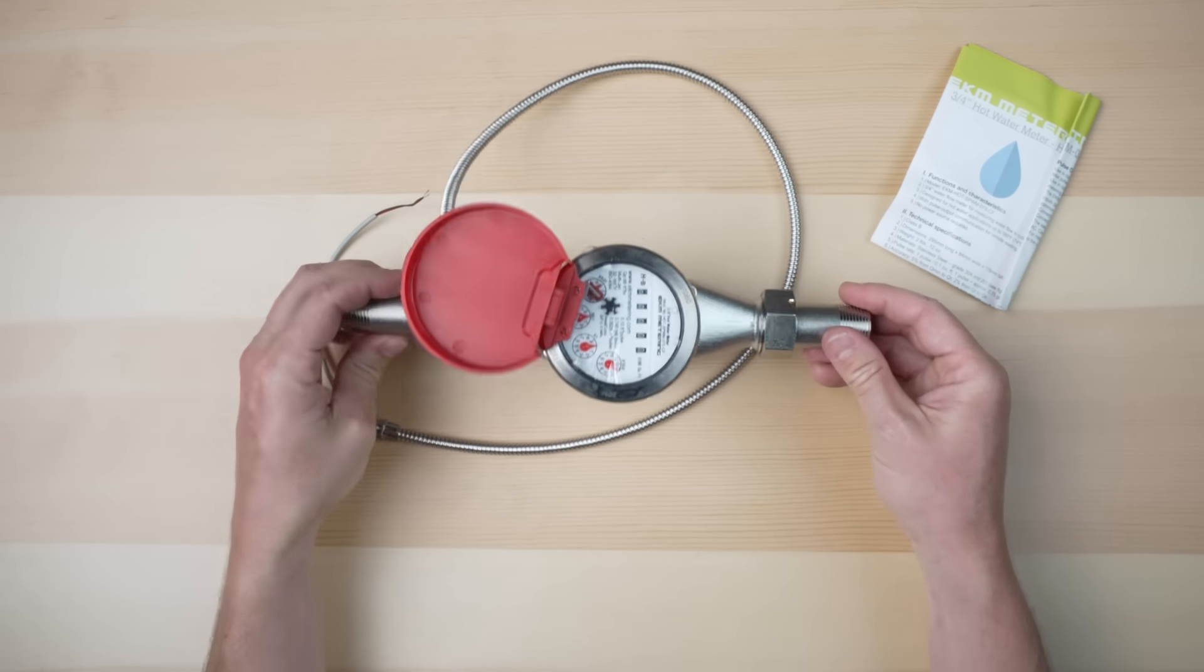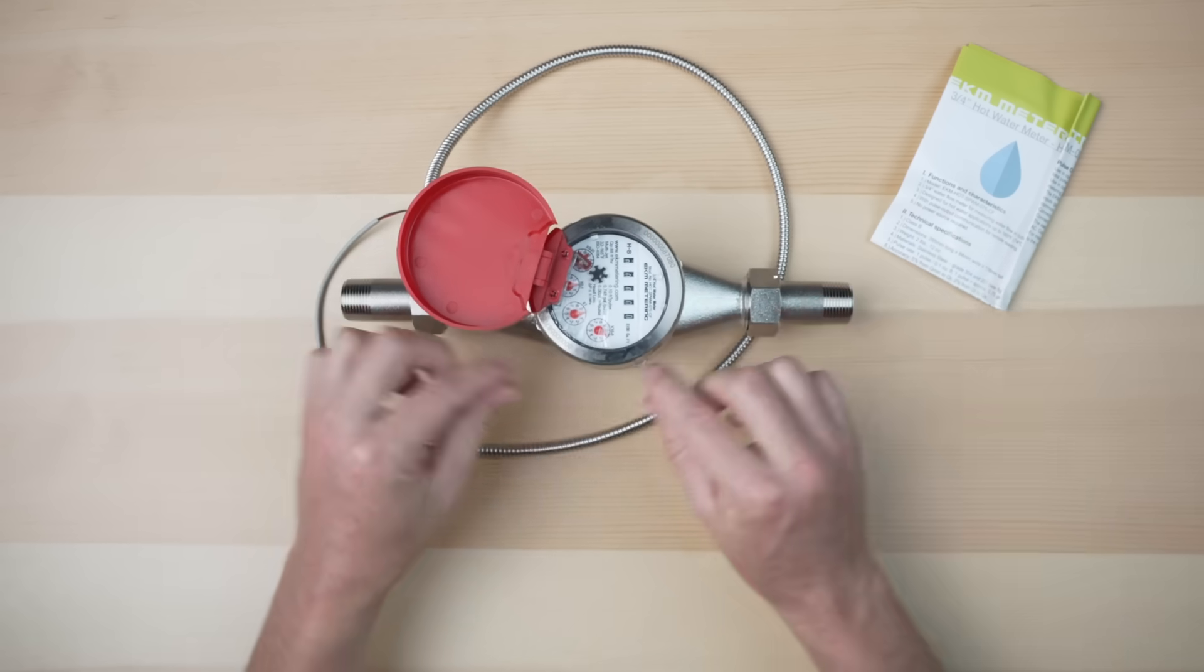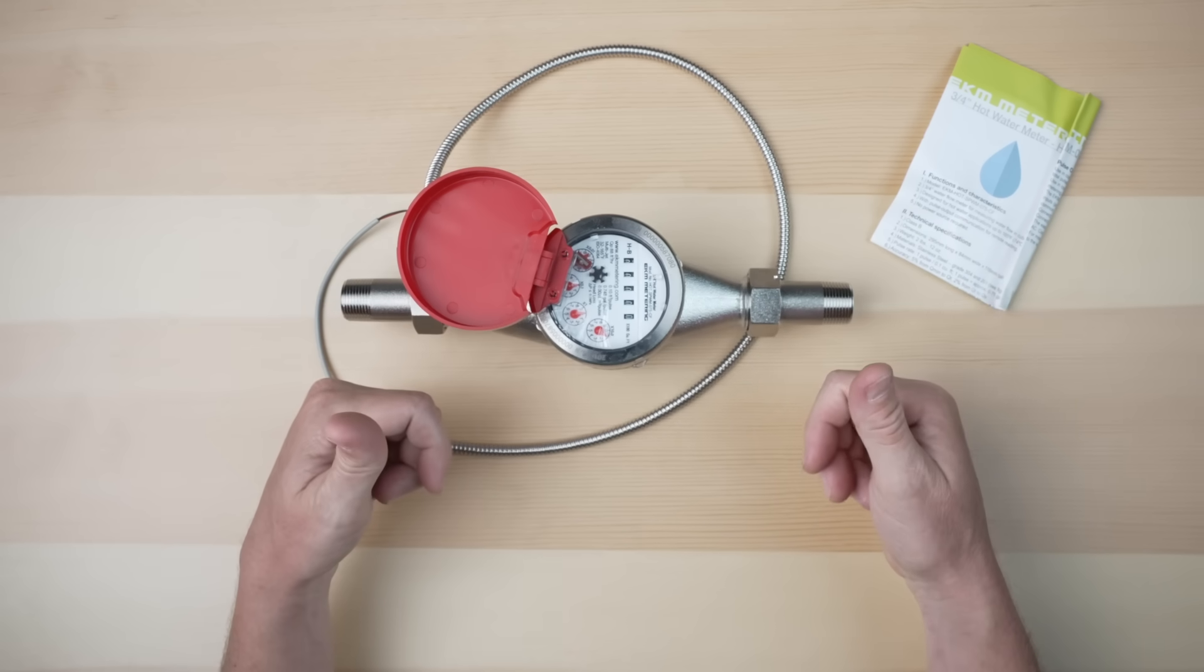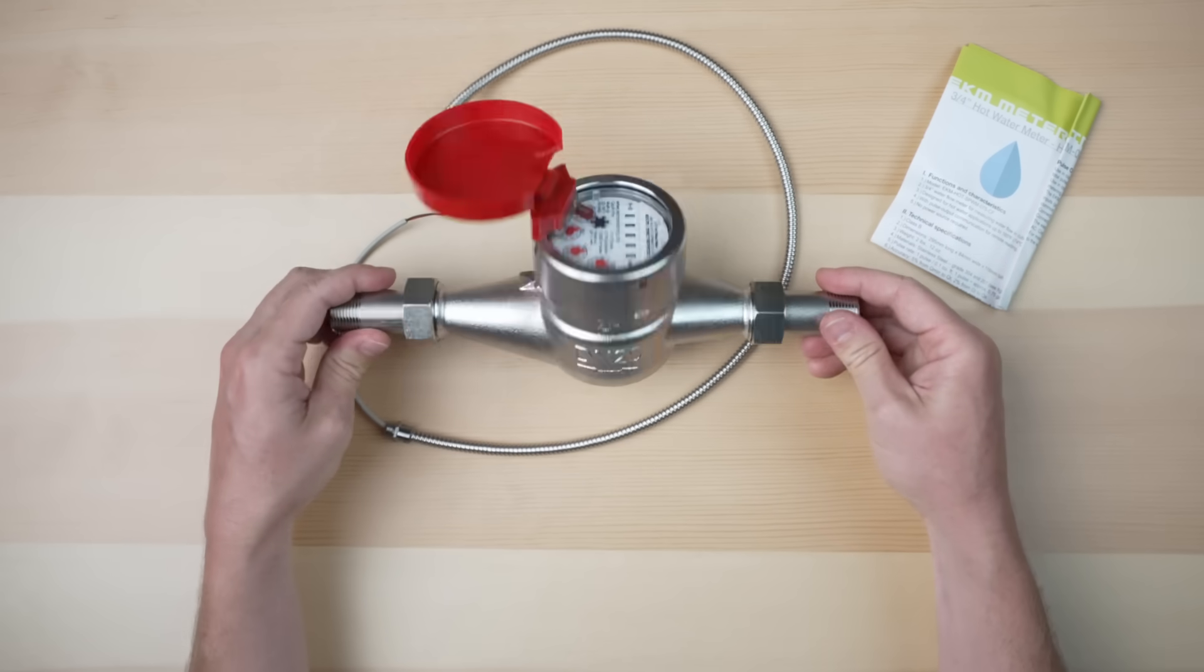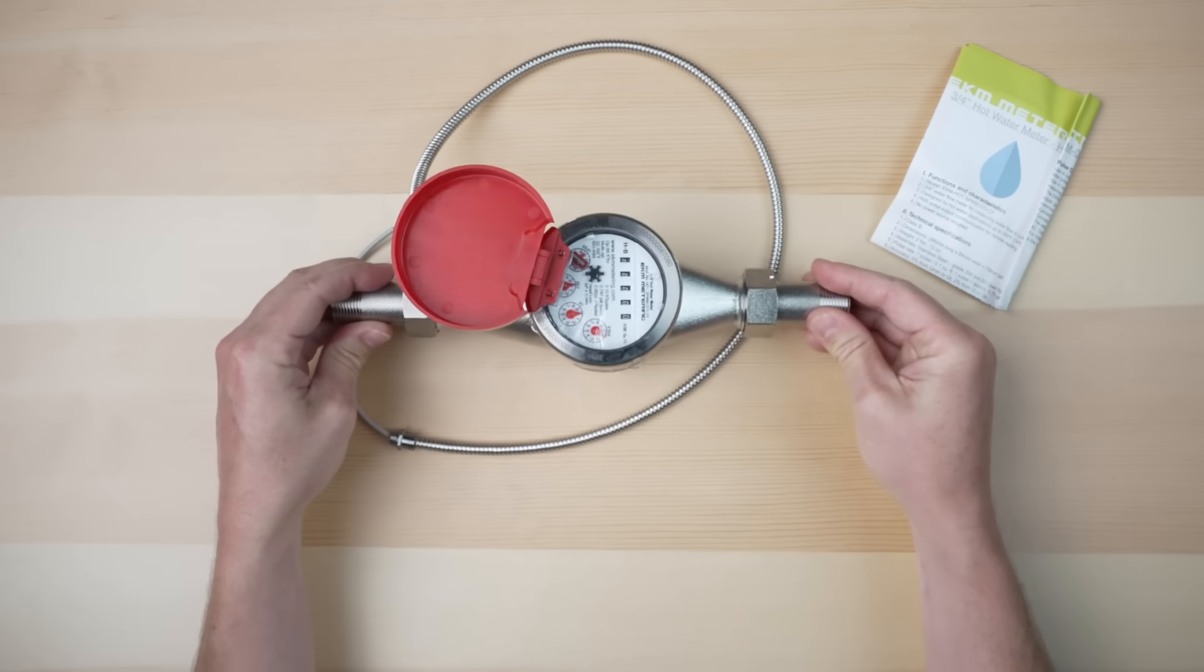This is a horizontal water meter, so it must be installed horizontally with the dials facing upwards. Installed at any other orientation and it will not meter accurately.